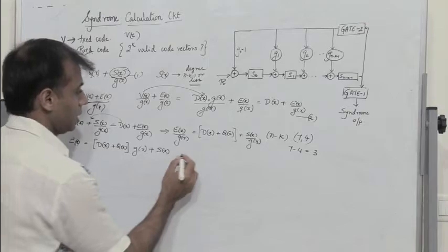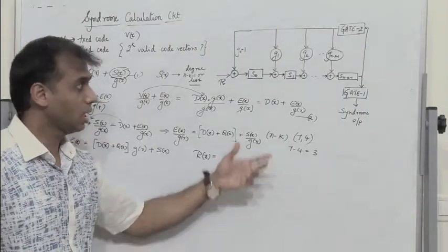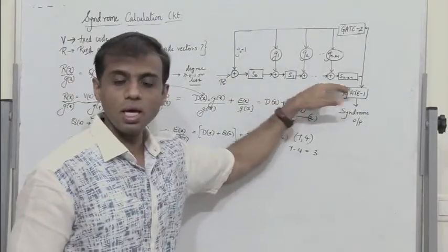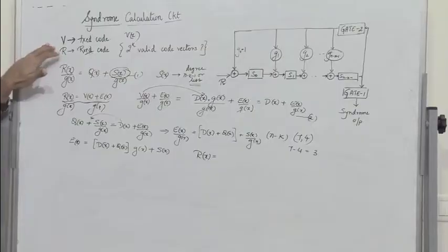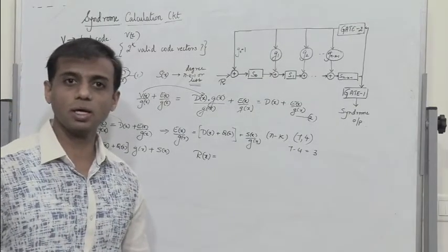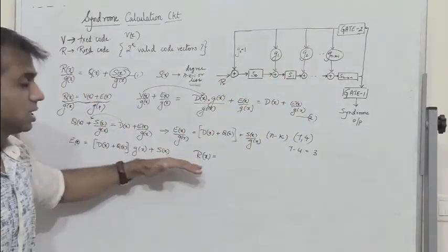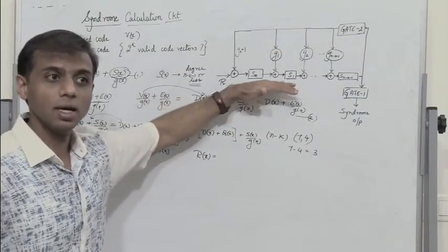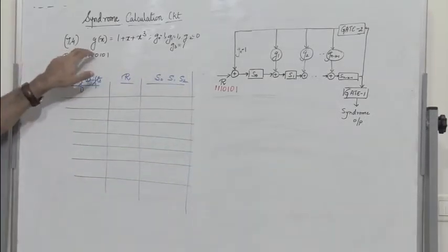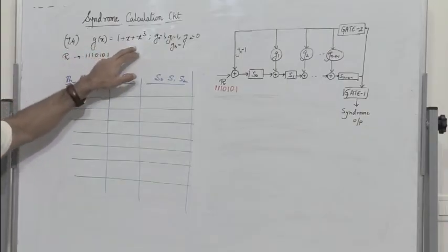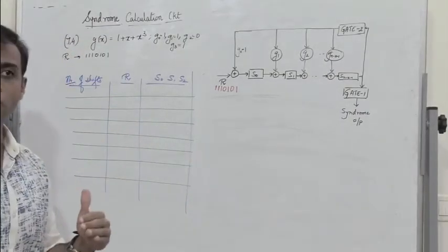If the received vector has an error, the syndrome will be non-zero. If the syndrome is 0, it means the received vector equals the transmitted vector — there is no error. We will examine both cases: a received vector with error giving a non-zero syndrome, and a received vector without error giving an all-zero syndrome. We again consider a 7,4 cyclic code with generator polynomial G(X) = 1 + X + X³, so that it is easier to follow throughout.